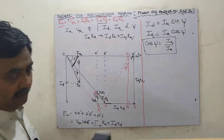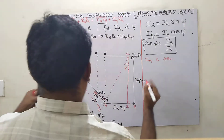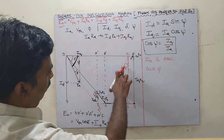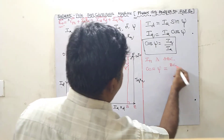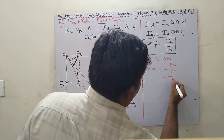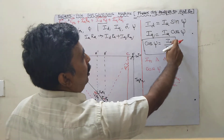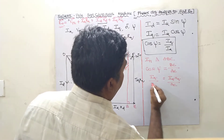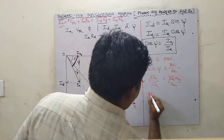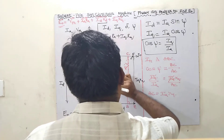Now I am taking triangle ABC. In triangle ABC, cos psi equals adjacent side divided by hypotenuse. Adjacent side equals BC, hypotenuse is AC. BC equals IQ·Xq. So IQ·Xq divided by AC equals cos psi. But we already know cos psi equals IQ divided by IA. Cancelling IQ from both sides, we get AC equals IA·Xq. This is a key result: AC equals IA into XQ.